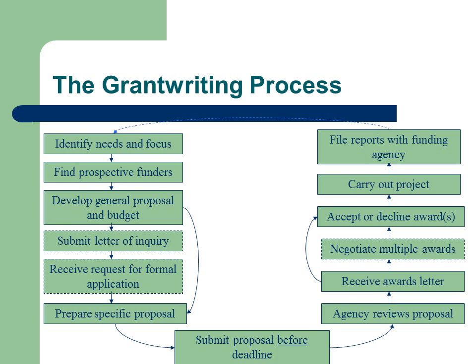Here's a flowchart for the grant writing process. Starting at the upper left: identify the needs and focus, find prospective funders, develop a general proposal and budget. Sometimes you'd submit a letter of inquiry — some funders ask for a brief one-to-three-page letter as their first stage. They screen all those letters and then invite people to apply for the next phase. You might receive a request for a formal application, prepare your specific proposal, and submit it before the deadline.